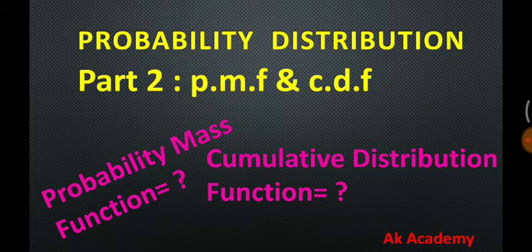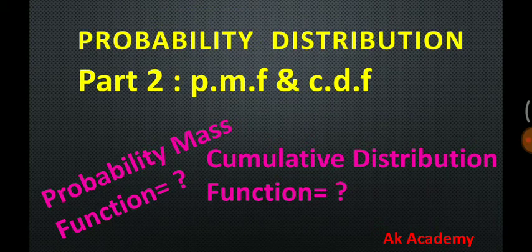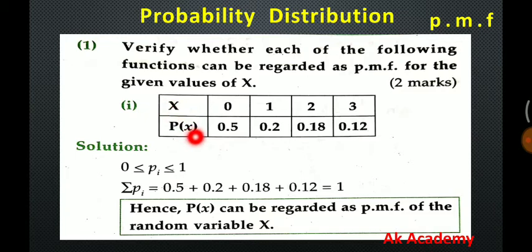Let's start with question number one. Question number one says: verify whether each of the following functions can be regarded as a PMF for the given values of X, where X equals 0, 1, 2, and 3, and P(X) equals 0.5, 0.2, 0.18, and 0.12, where X is a random variable and P(X) is the probability at that random variable X.